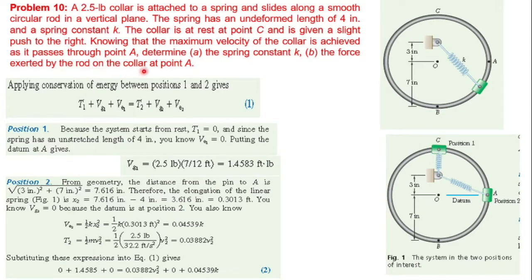We need to determine the spring constant k and the force exerted by the rod on the collar at point A. Given: the collar weighs 2.5 pounds, initially at point C. The spring's undeformed length is 4 inches. Looking at the geometry, the 4-inch undeformed position marks the spring's natural length. The collar is given a push and moves toward point A.